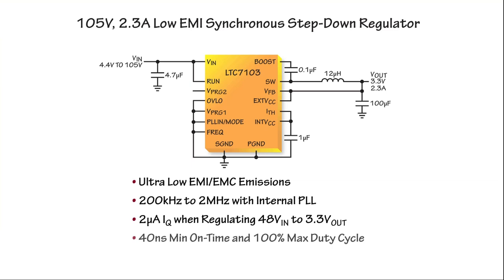The LTC7103 features a low minimum on time of 40 ns together with a maximum duty cycle of 100%. This enables the output voltage to be set anywhere between 1V and the input voltage.